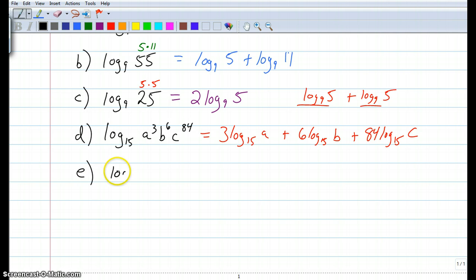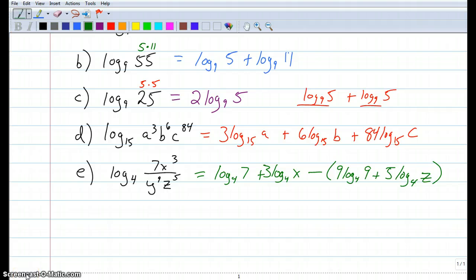E is log base 4 of 7x to the 3rd over y to the 9th z to the 5th. Maybe you need a minute to look at this one, but give this one a shot. And if you can do E, then you're a samurai warrior. Go ahead and give it a shot. Did you come up with this one? It might have took a couple steps, but there it is. Part 2.